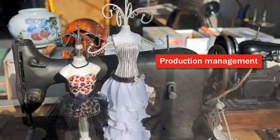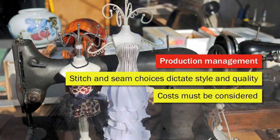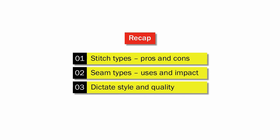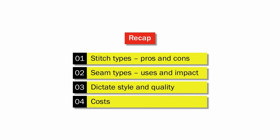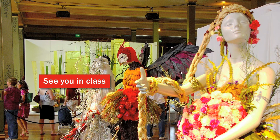So as you've seen, stitch and seam choices can dictate both the design and quality of a final piece of clothing, as well as the costs of production, and are therefore another important component of the production process. Let's recap on what we've learnt in this video. We've covered some of the most commonly used stitch formations and their advantages and disadvantages. We've also looked at different types of seams and how these are used in garment construction. We've seen how stitch and seam choices dictate the overall quality and style of a garment, and they also affect production costs, so are an important consideration for a product developer when costing a garment. That's all for this lesson. Thanks for watching.